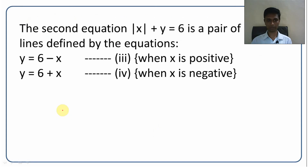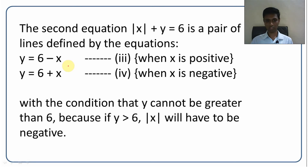The second equation is mod x plus y equals 6. This becomes y equals 6 minus x when x is positive, and y equals 6 plus x when x is negative. Since mod x is always positive, the entire equation is defined only when y is less than or equal to 6. The moment y exceeds 6, mod x would have to be negative, which is impossible.